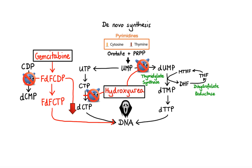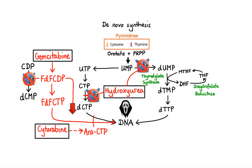Another anti-metabolite analog of cytidine is a drug called cytarabine. Similarly to gemcitabine, upon entry into the cell, cytarabine is sequentially phosphorylated by kinase enzymes to its active metabolite, cytarabine triphosphate (ara-CTP). Ara-CTP is a potent inhibitor of DNA polymerases and is also incorporated into replicating strands, leading to termination of DNA synthesis directly at the site of incorporation.